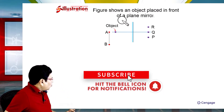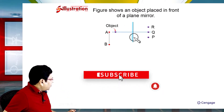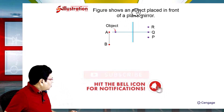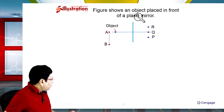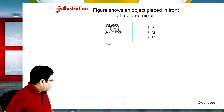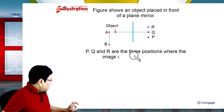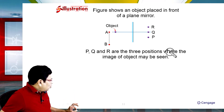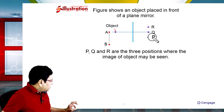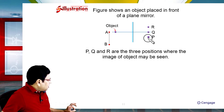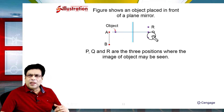In this illustration, we are given this figure which shows an object placed in front of a plane mirror. This is the plane mirror and this is the object under consideration placed in front of it. P, Q, R are the three positions where the image of the object may be seen.